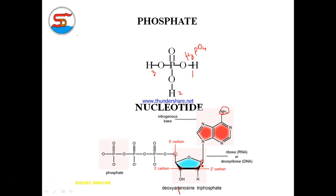In nucleotide formation, nitrogen at position 9 bonds with carbon at position 1. The fifth carbon has a phosphate group attached. This completes the nucleotide structure. A nucleoside plus a phosphate group forms a nucleotide.